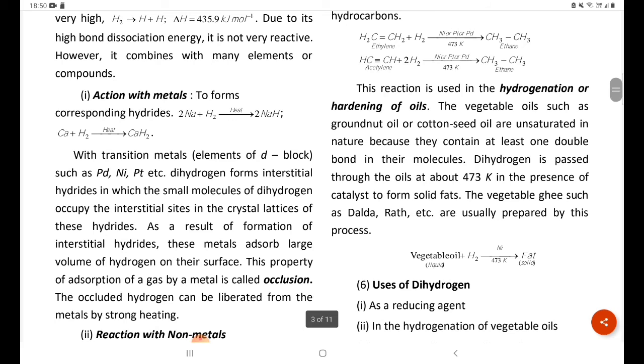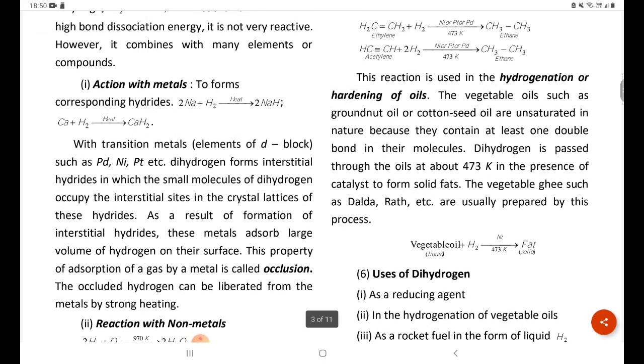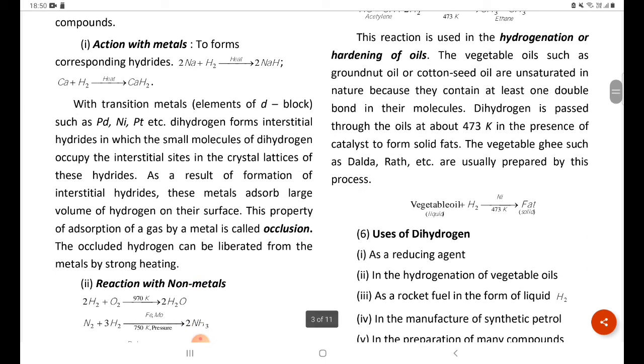Dihydrogen is passed through the oils at about 473 K in the presence of catalyst to form solid fats. The vegetable ghee such as Dalda, which is prepared in this process.